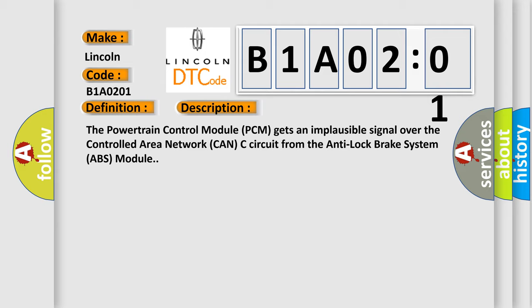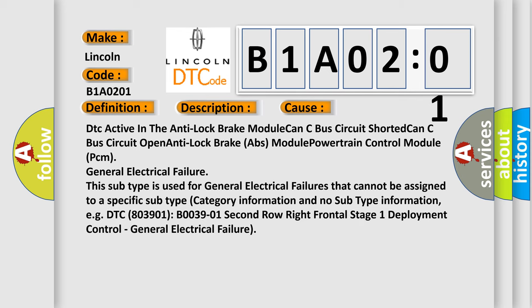This diagnostic error occurs most often in these cases: DTC active in the anti-lock brake module, CAN-C bus circuit shorted, CAN-C bus circuit open, Anti-lock brake ABS module, powertrain control module PCM, general electrical failure. This subtype is used for general electrical failures that cannot be assigned to a specific subtype category information and no subtype information, e.g. DTC 803901, B003901 2nd row right frontal stage 1 deployment control, general electrical failure.